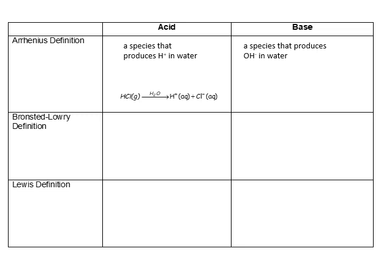An Arrhenius base, on the other hand, is a species that produces the hydroxide ion in water. Sodium hydroxide, in its pure form, is actually a solid. When it dissolves in water, because it's an ionic compound, it splits apart into sodium ions and hydroxide ions. So again we see the production of the hydroxide ion indicating that this is an Arrhenius base.